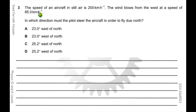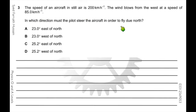In the next question, the speed of an aircraft in still air is 200 km/h. The wind blows from the west at 85 km/h — from the west means towards the east. The pilot must steer to fly due north. There are two vectors: 85 km/h due east, and the aircraft's velocity of 200 km/h in an unknown direction. The resultant is due north — direction known, magnitude unknown.